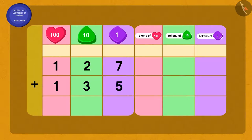What do we have to do first? Yes! By adding 7 ones to 5 ones, we get 12 ones.